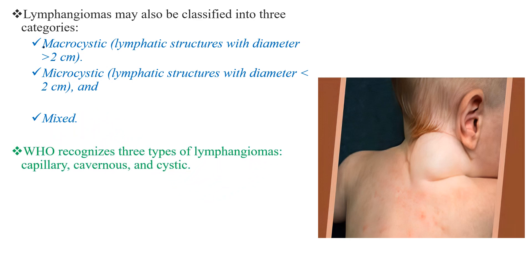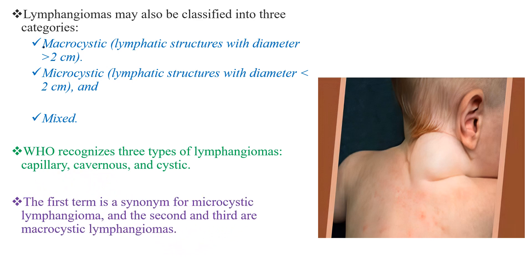The WHO recognizes three types of lymphangiomas: capillary, cavernous, and cystic. The first term, capillary, is a synonym for microcystic lymphangioma. The second and third terms, cavernous and cystic, stand for macrocystic lymphangiomas.